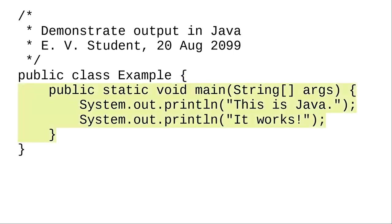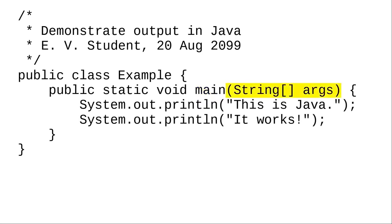Java uses braces to indicate a block of code — sections of code that belong together. Every opening brace must have a closing brace. Within the class, you define methods, which describe the things the class does. Methods are a lot like mathematical functions. The words public, static, void are, for now, a magic spell that you need to chant to make Java happy. Main is the name of the method. Whenever the operating system runs one of your Java programs, it looks for a method with that special name and starts by executing that method. Java is case sensitive — if you were to name that method MAIN with a capital M, the operating system wouldn't find it.